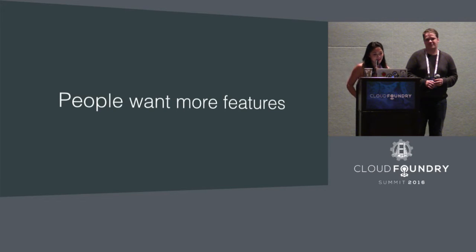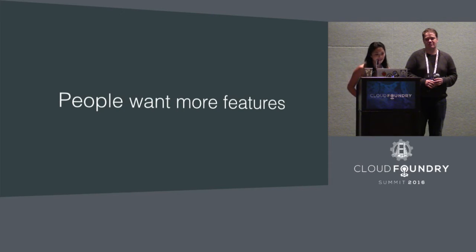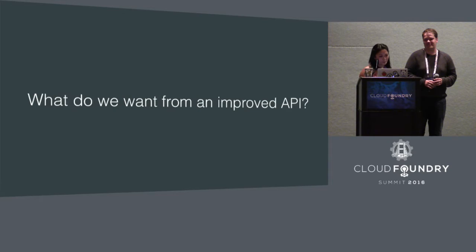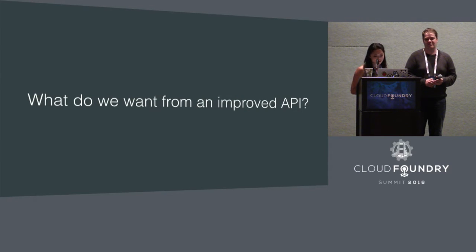The Cloud Foundry API is used by a lot of CF tools, including the CLI. But lots of people, maybe you, have developed tools directly on top of it or have interacted directly with it. As a result, we get a lot of feature requests. Unfortunately, some of the more frequent feature requests are hard or impossible to do by incrementally improving the API, so we needed to make a more drastic change to allow us to respond to the changing needs of app developers.